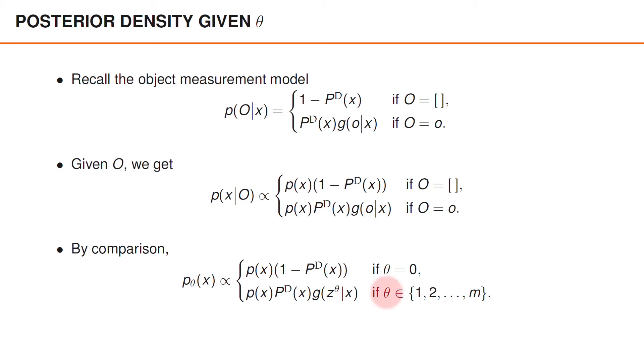If θ takes an integral value between 1 and M, we know that z_θ is an object measurement, which means that O equals z_θ. We also see that p_θ(x) is identical to p(x|O) when we set O equal to z_θ.